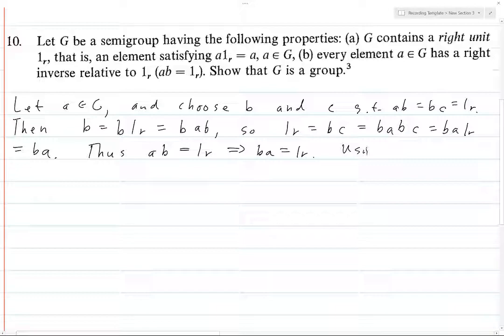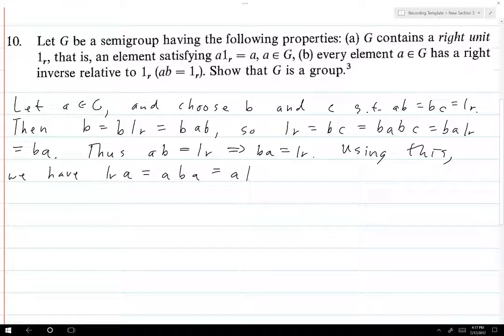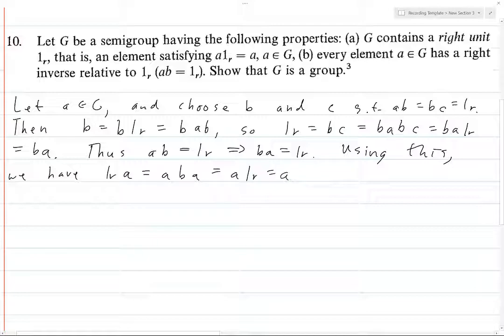So using this, we have 1_r times a equals aba, but that's—so this is again assuming that a times b equals 1_r. So 1_r times a equals—we replace 1_r with aba, but we know that if ab equals 1_r, then ba equals 1_r as well. So we can replace this thing on the right here with 1_r, but because 1_r is a right unit, this is equal to a.